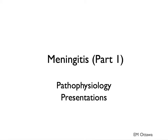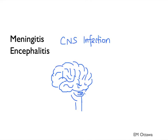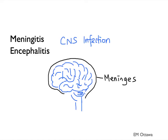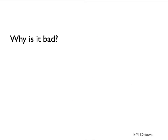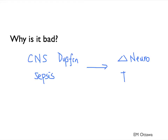Welcome to Meningitis Part 1. In this section, we'll discuss the pathophysiology and presentations of meningitis and encephalitis. Meningitis and encephalitis are infections of the central nervous system. Meningitis primarily affects the meninges, while encephalitis is confined to the brain parenchyma. If left untreated, they cause significant CNS dysfunction and sepsis, leading to lifelong neurological disabilities and even death. Therefore, they are both must-not-miss diagnoses in the emergency department.